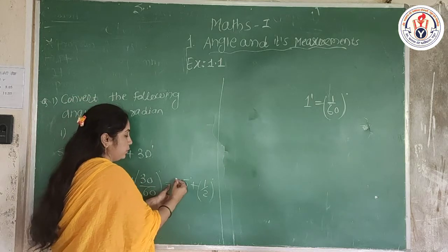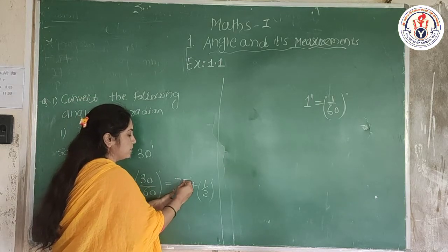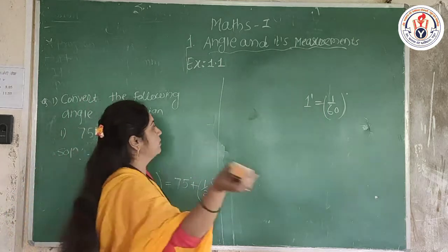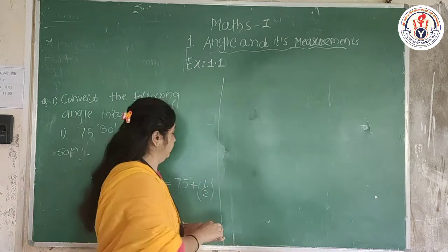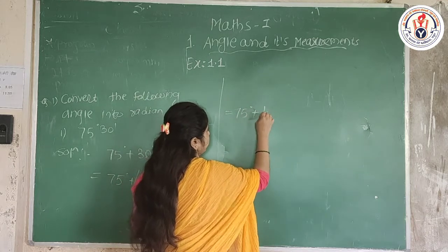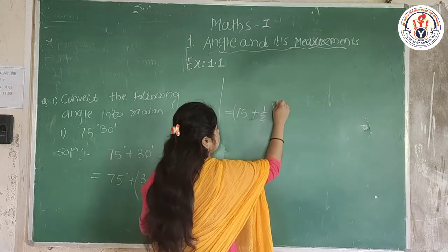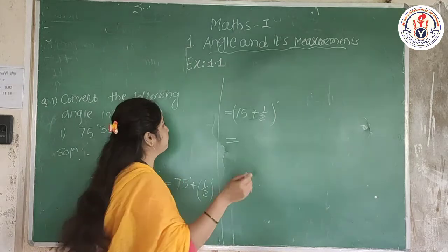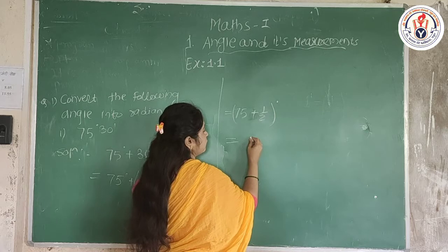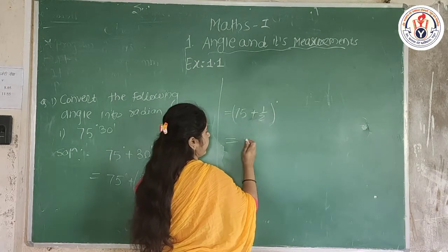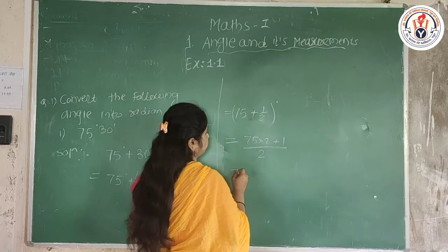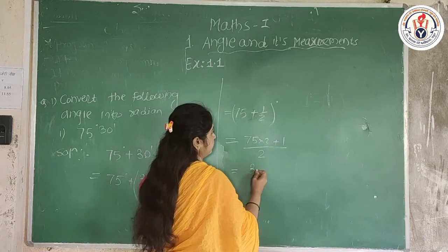We can write both parts with degree units. It is equal to 75 + 1/2 degrees. So how much is that? We write it as (75 × 2 + 1) / 2, which equals 151/2 degrees.